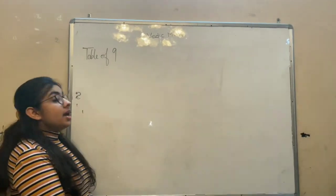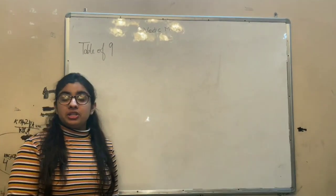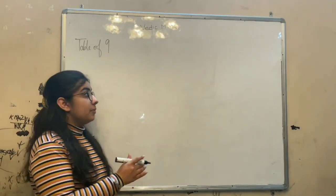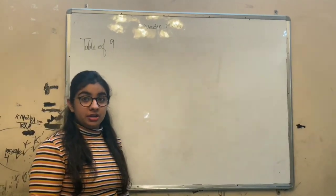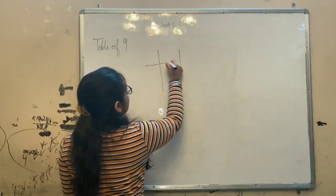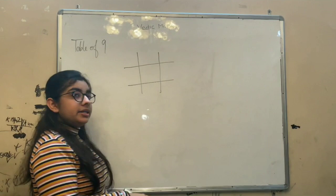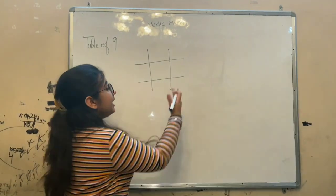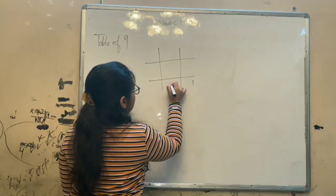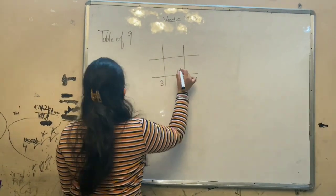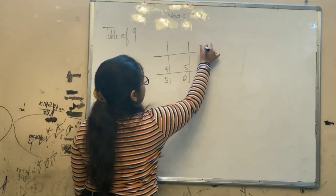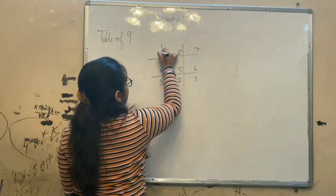So let's have a look. To start with, we are going to start with the table of 9, the first and the simplest of all. To do that, let's draw a grid of 3 by 3, like this one. Now, start writing the values from 1 to 9, starting from the rightmost corner of the table: 1, 2, 3, 4, 5, 6, 7, 8, 9.